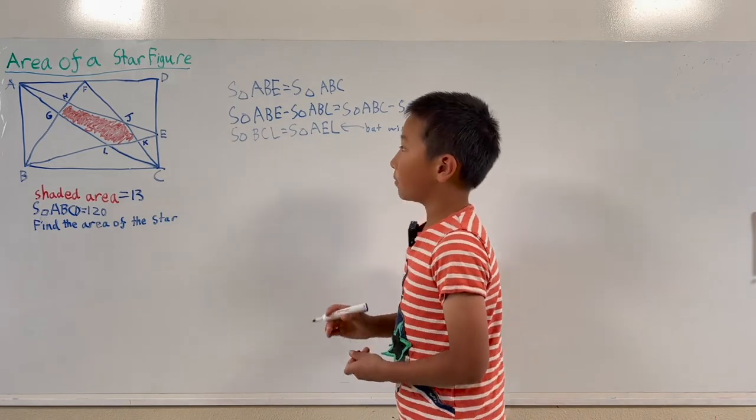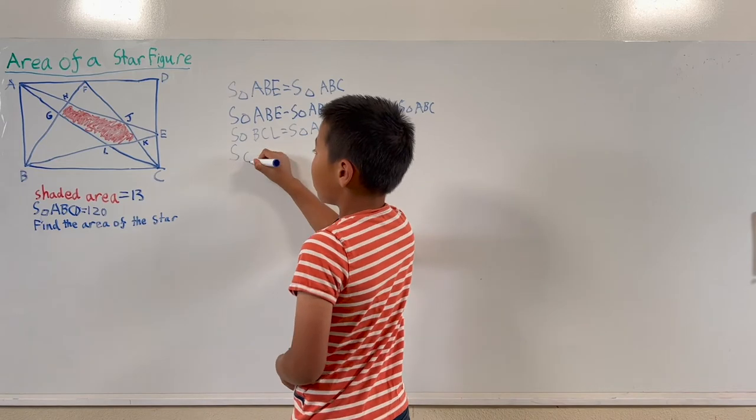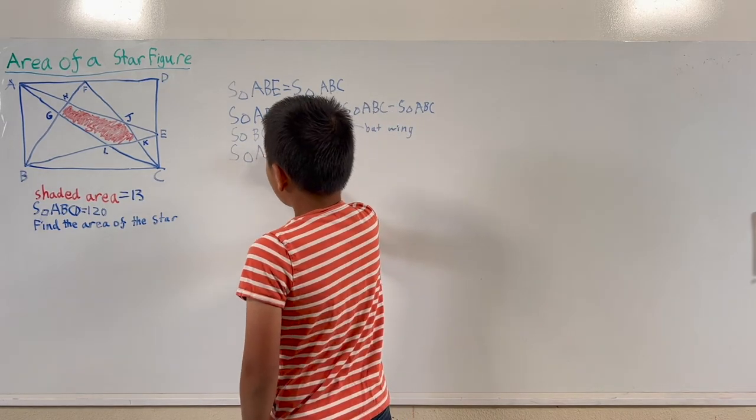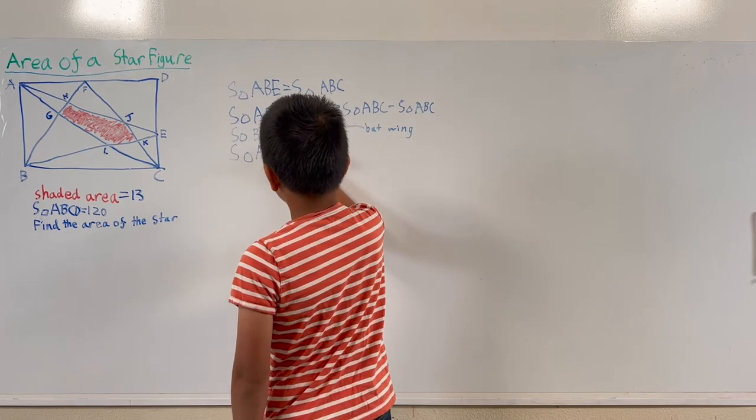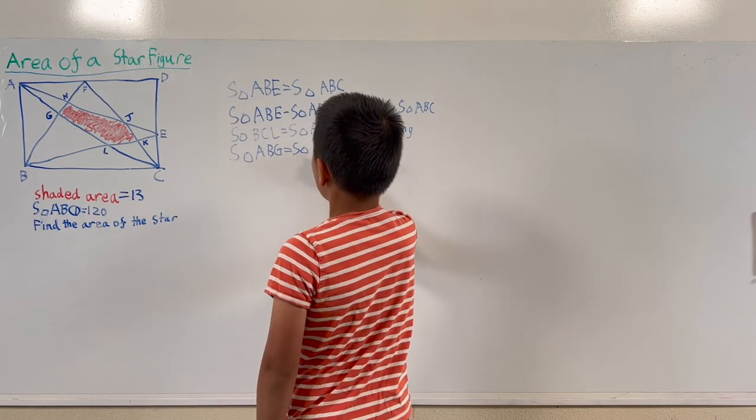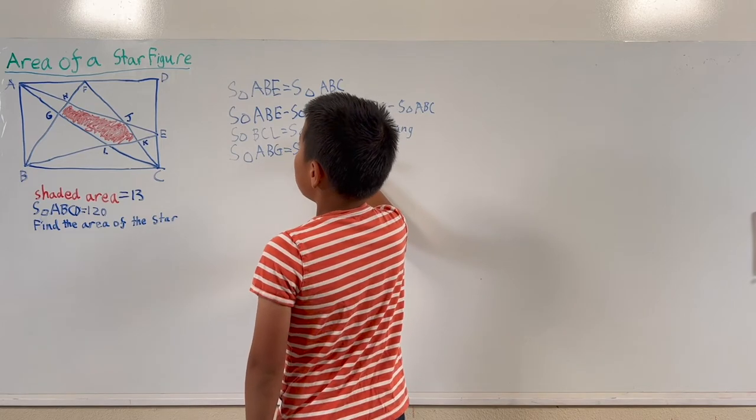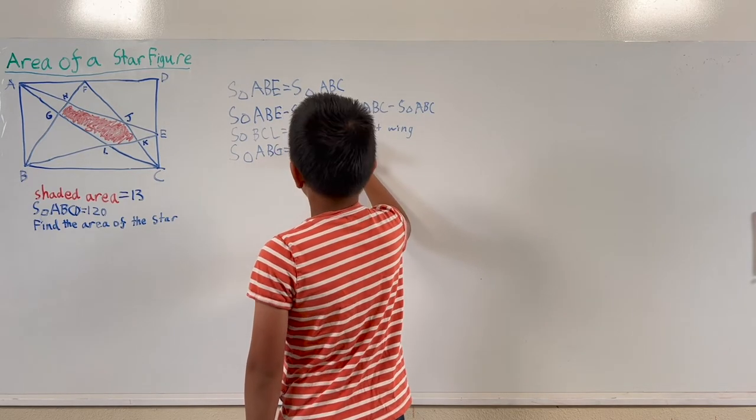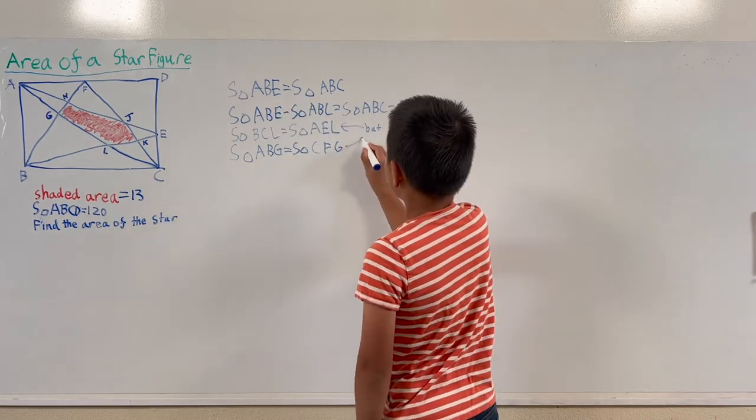So also using batwing, we can get that the area of triangle ABG equals the area of triangle ACFG. This is also batwing.